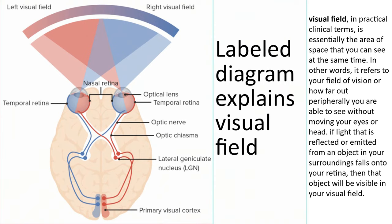Visual field in practical clinical terms is essentially the area of space that you can see at the same time. In other words it refers to your field of vision or how far out peripherally you are able to see without moving your eyes or head. If light that is reflected or emitted from an object in your surroundings falls onto your retina, then that object will be visible in your visual field.